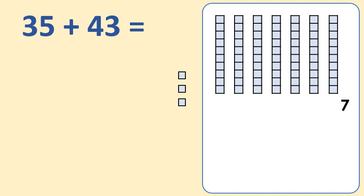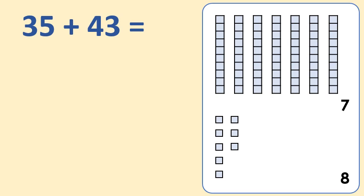Then we add together the ones. Five plus three is eight, so there are eight ones. Seven tens and eight ones is 78.